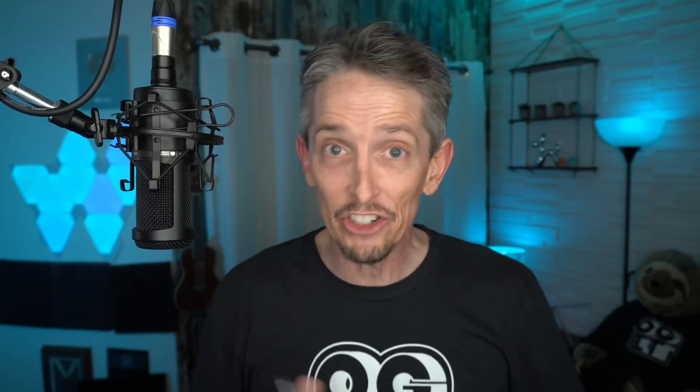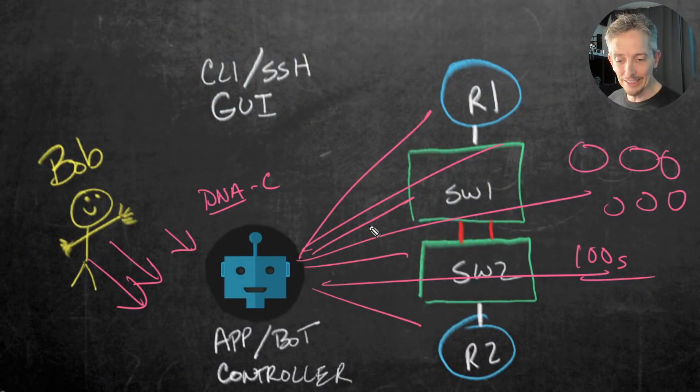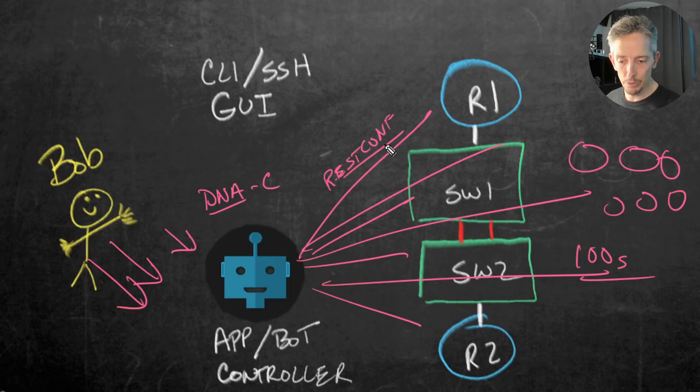It goes a step further: there's a specific REST-based API called RESTconf — R-E-S-T-C-O-N-F. It's very handy. It's a RESTful API used between a controller and networking devices for determining information from that networking device and also pushing information to that networking device if we need to make changes. RESTconf would be the API in use between the controller and the networking device.